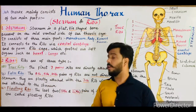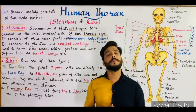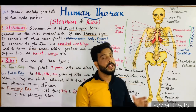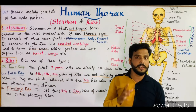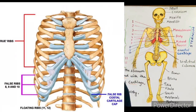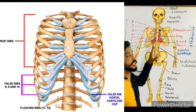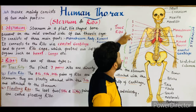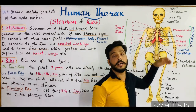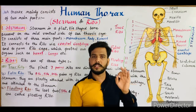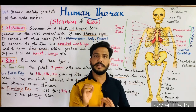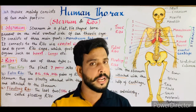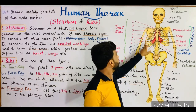Now, the important thing about ribs is that ribs are of three types, categorized on the basis of their attachment with the sternum. Number one: true ribs. True ribs are those ribs which are directly attached to the sternum. The first seven pairs — as you can see in this diagram, pairs one through seven — are directly attached to the sternum, hence they are called true ribs.